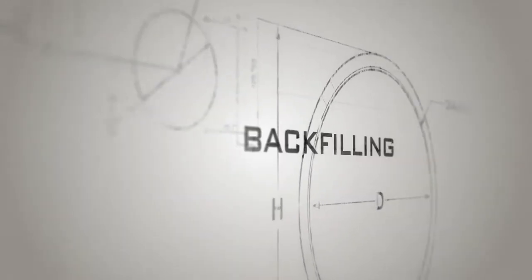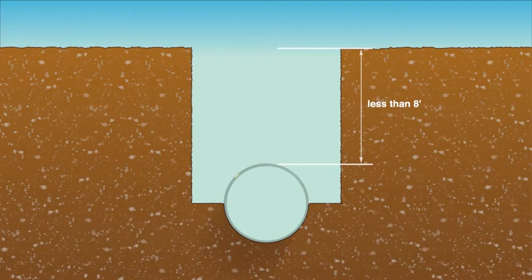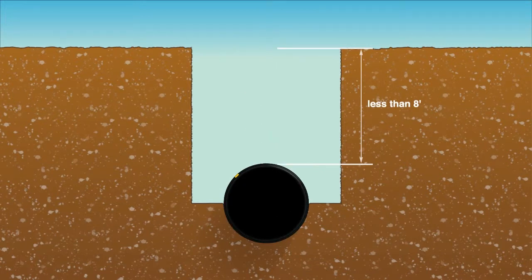Selecting proper backfill materials is essential in ensuring adequate pipe support and long-term pipe performance. If the burial depth of the pipe is 8 feet or less and a shaped trench bottom was used, native backfill material can be used to fill the trench.